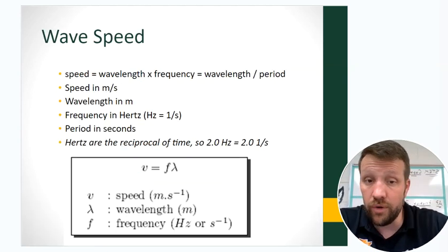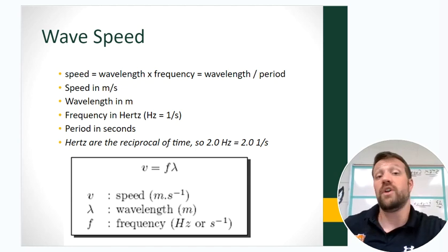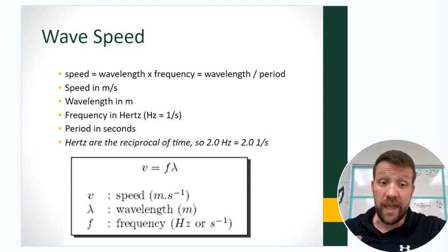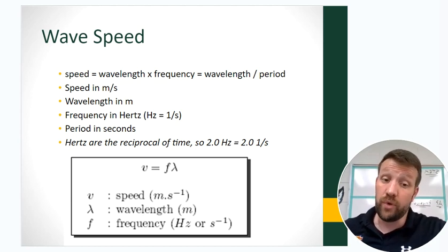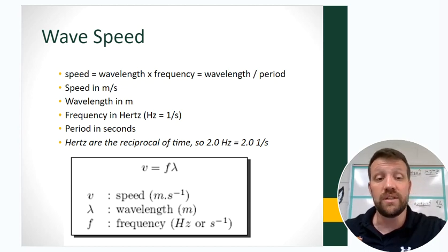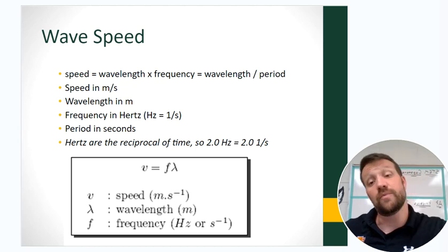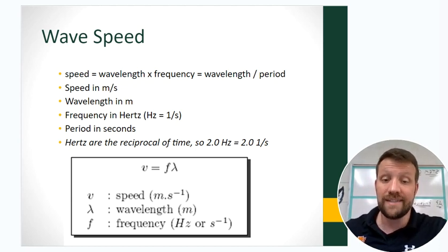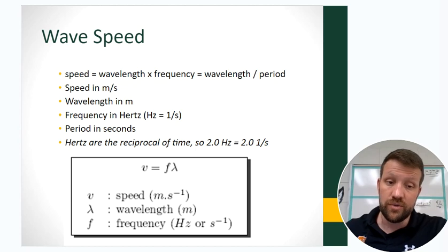How quickly waves travel is important. Units are meters per second. Wavelength in meters divided by the period in seconds gives wave speed. More often we'll use frequency, which is the inverse of period, so we can multiply wavelength and frequency to get meters per second. Frequency is measured in hertz, equivalent to one over a second. Two hertz equals 2.0 divided by seconds. For our work, most waves will be light-based, so speed will be c — the speed of light — on your reference page.